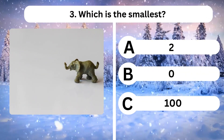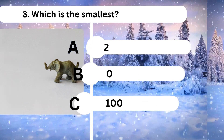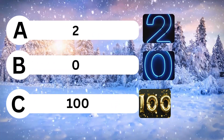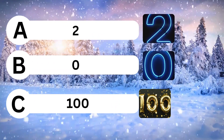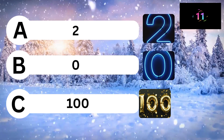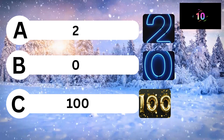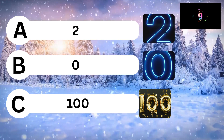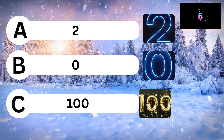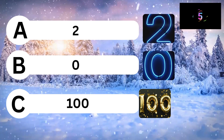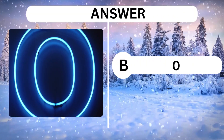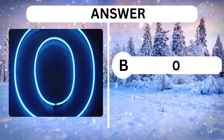Question 3. Which is the smallest? A. 2. B. 0. C. 100. Answer is B. 0.